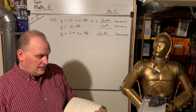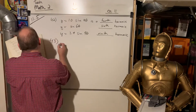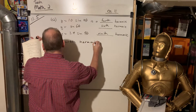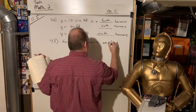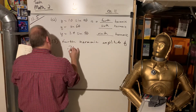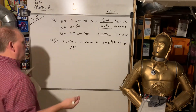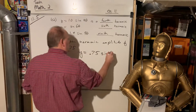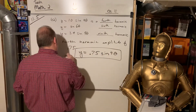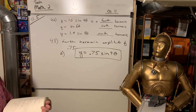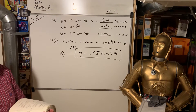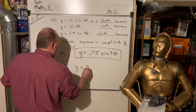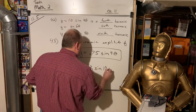Problem 43 goes the other way. If they say it's a fourth harmonic with an amplitude of 0.75, you write the equation: y equals 0.75 sine 4 theta. For part B of 43: a tenth harmonic with an amplitude of 8.3 is just y equals 8.3 sine 10 theta.